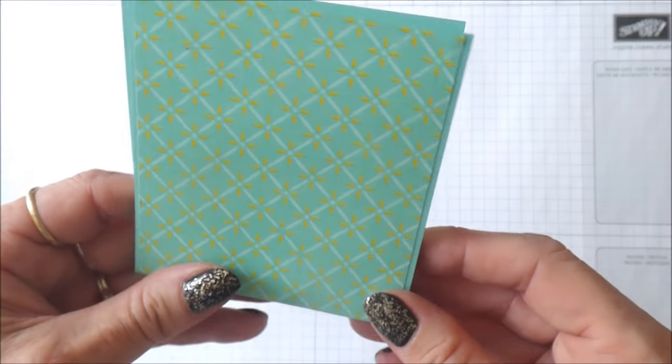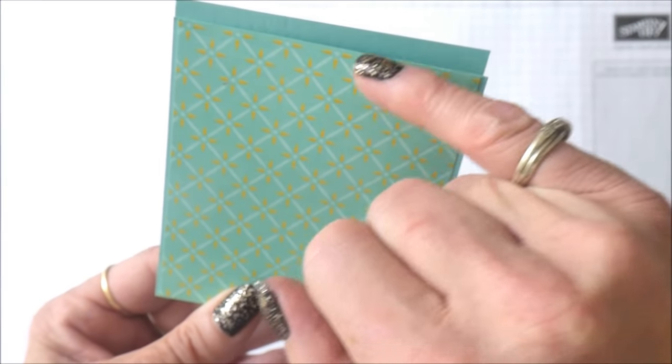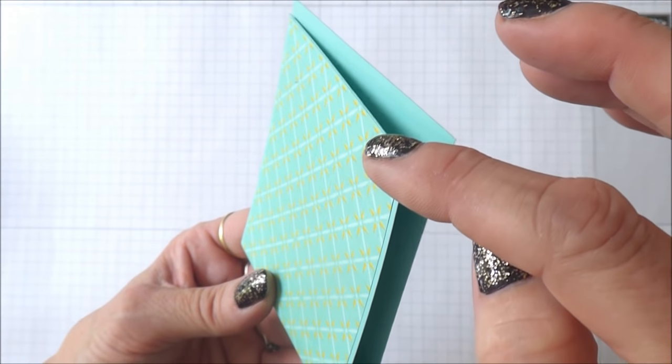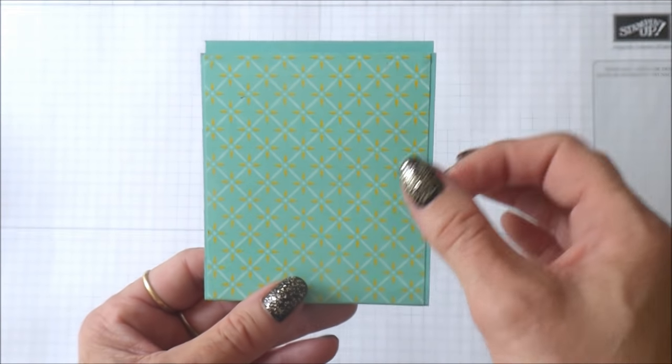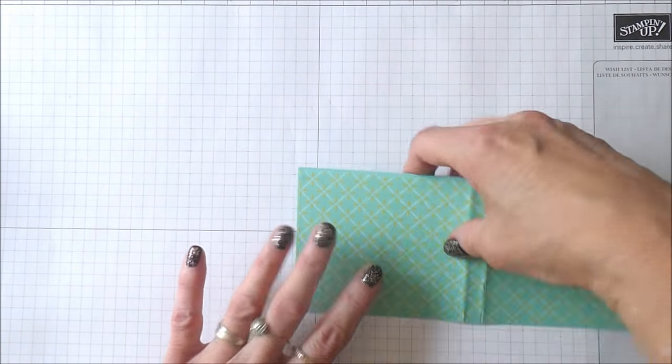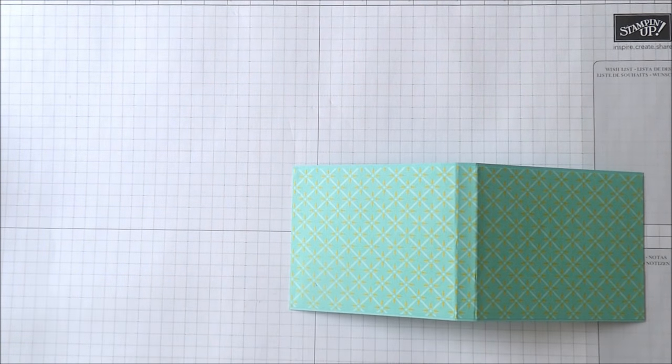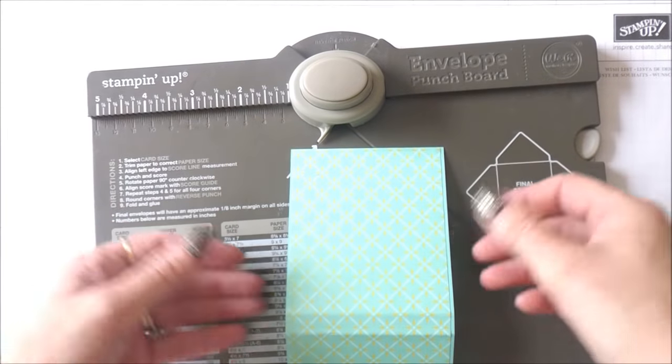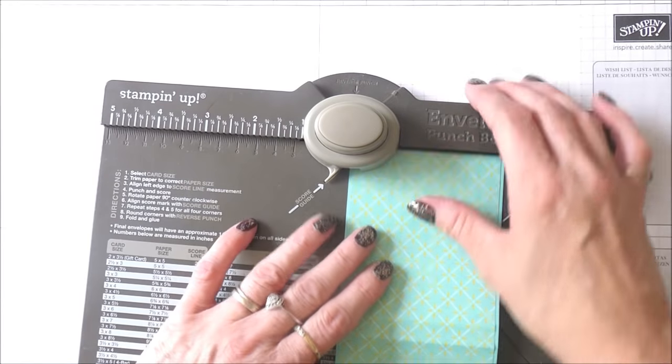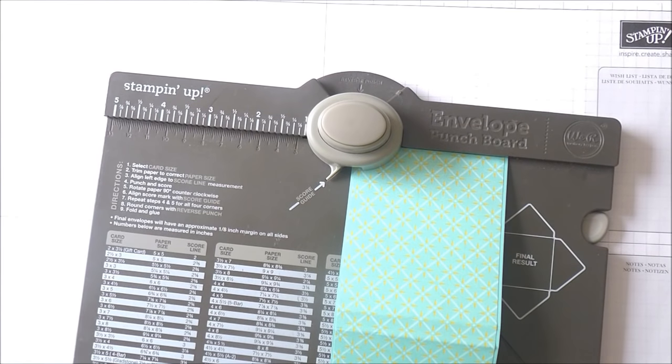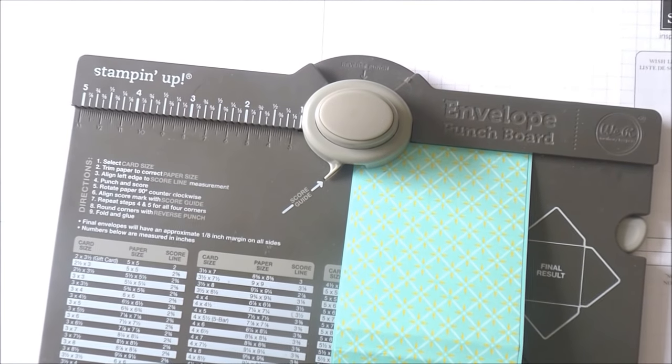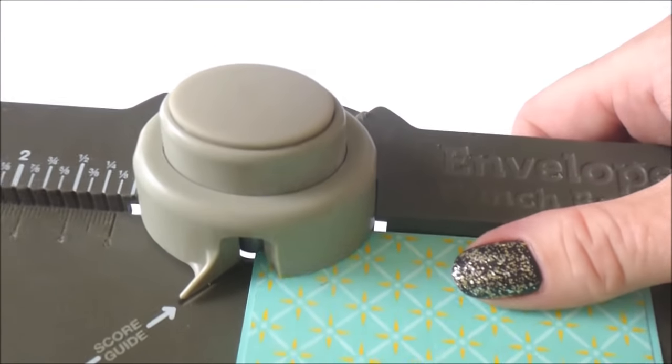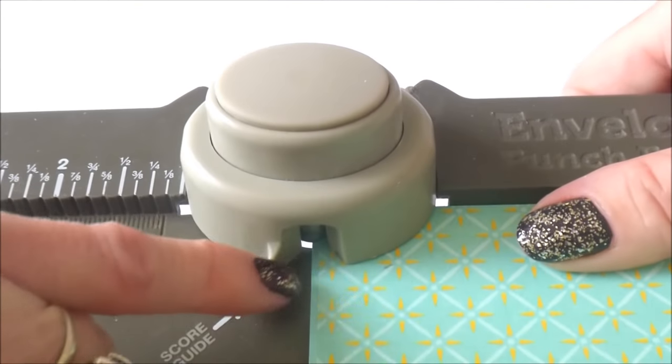We now have that - you'll see that one side is very slightly shorter than the other. Working on the short side, I'm going to grab my envelope punch board. Remember, this is the shorter side of the two.